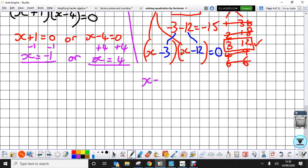Last step, that means that x minus 3 equals 0, or x minus 12 equals 0, and again, solving for x, add 3 to both sides, x equals 3, or add 12 to both sides, x equals 12. And my two solutions are there.